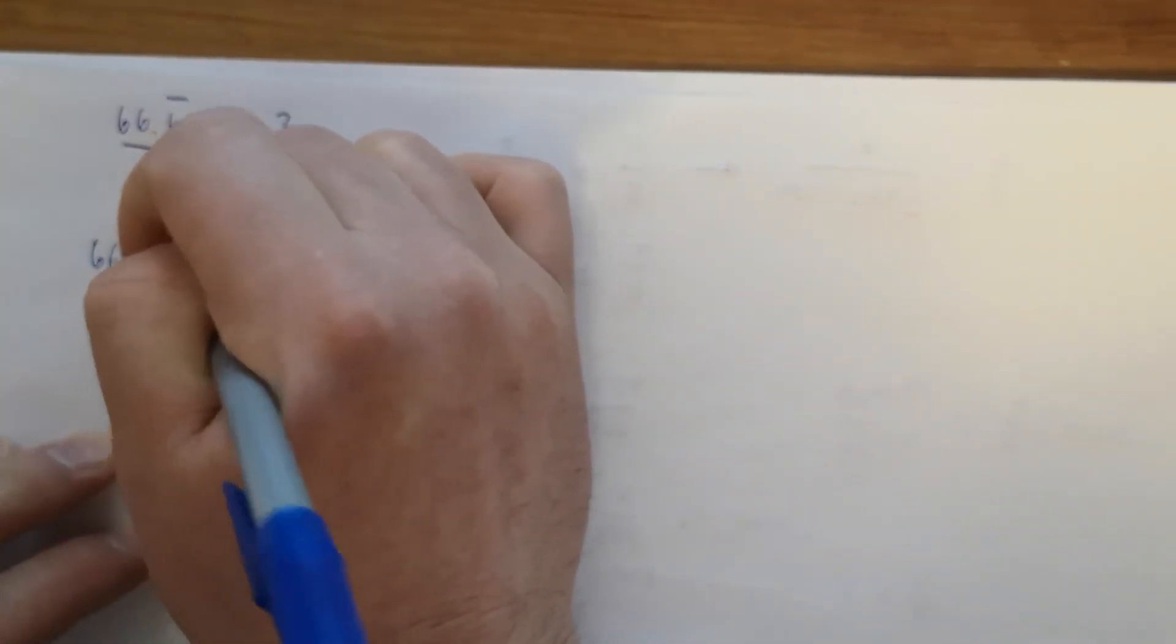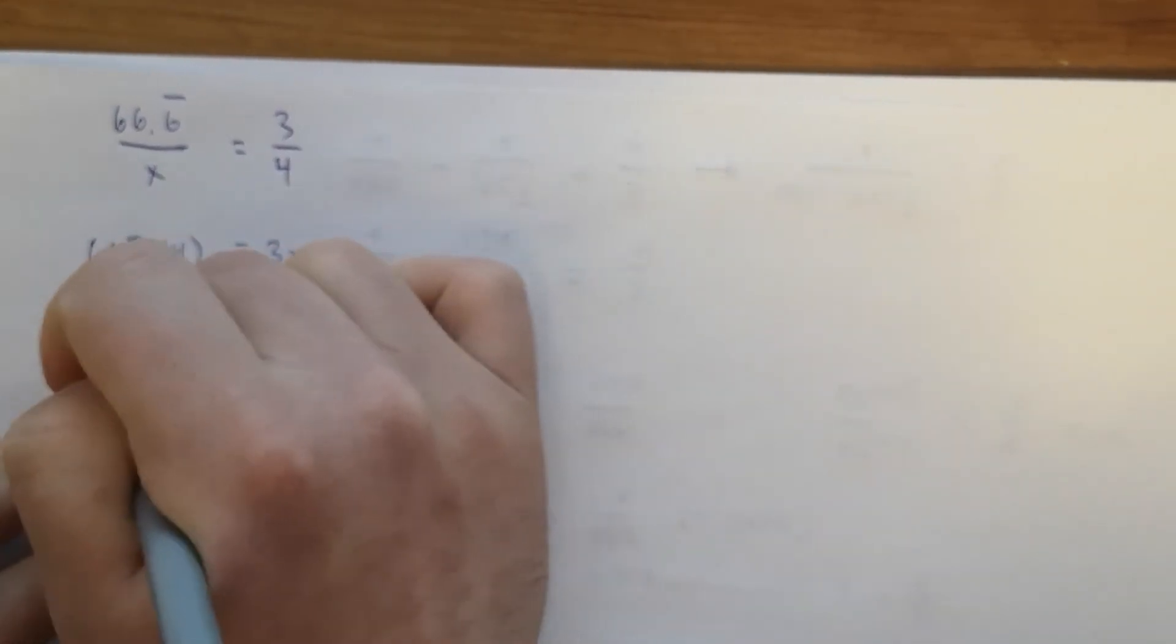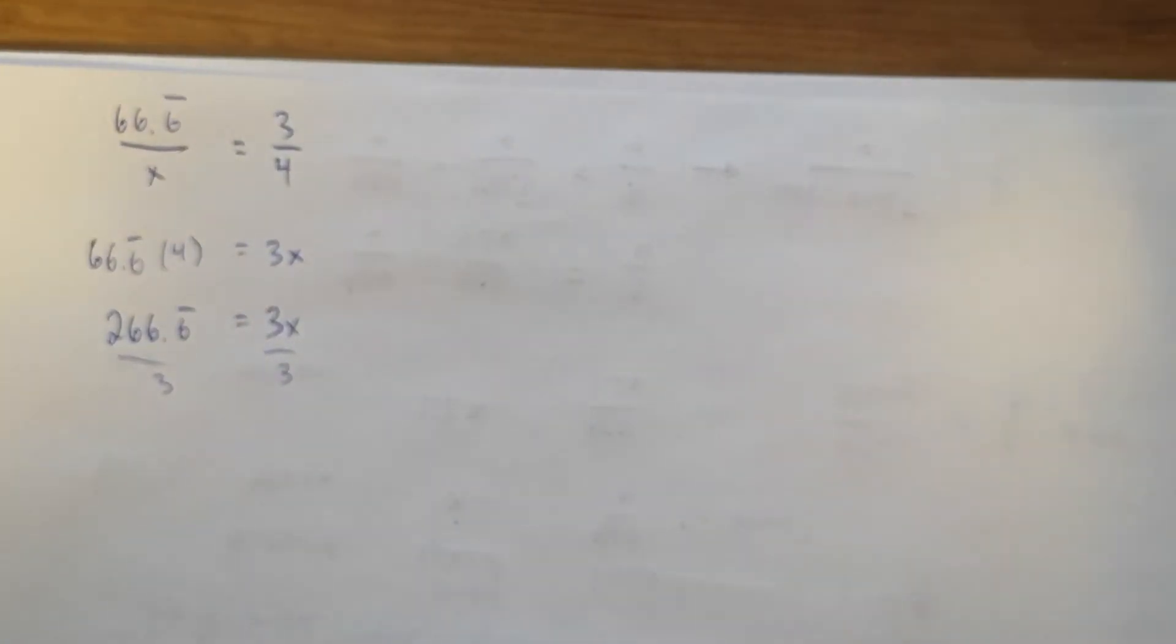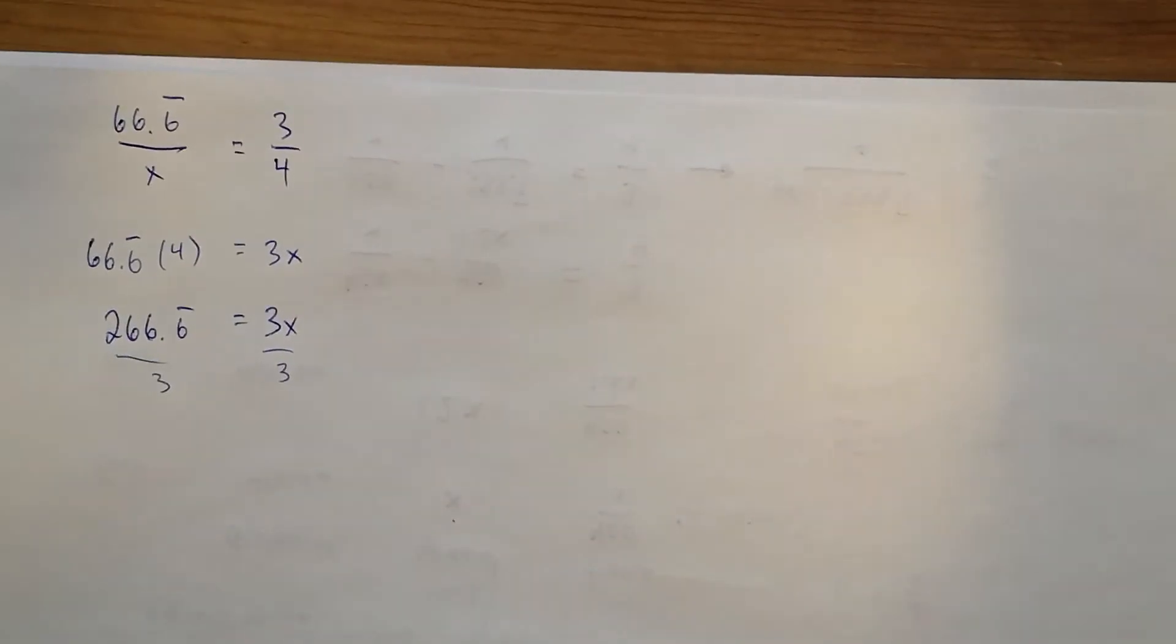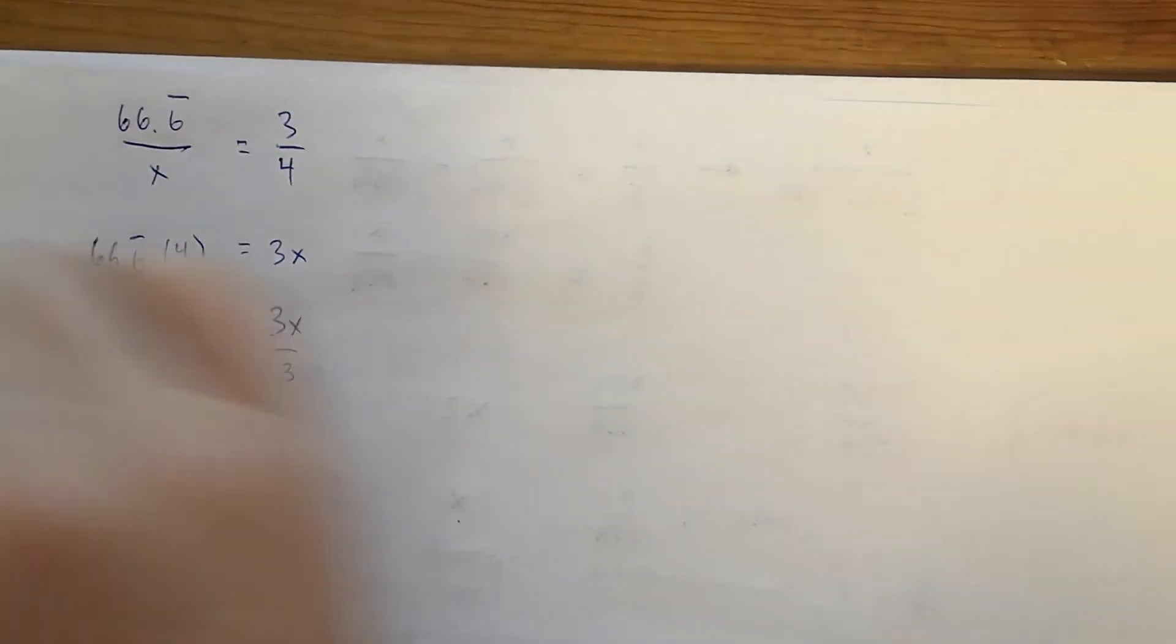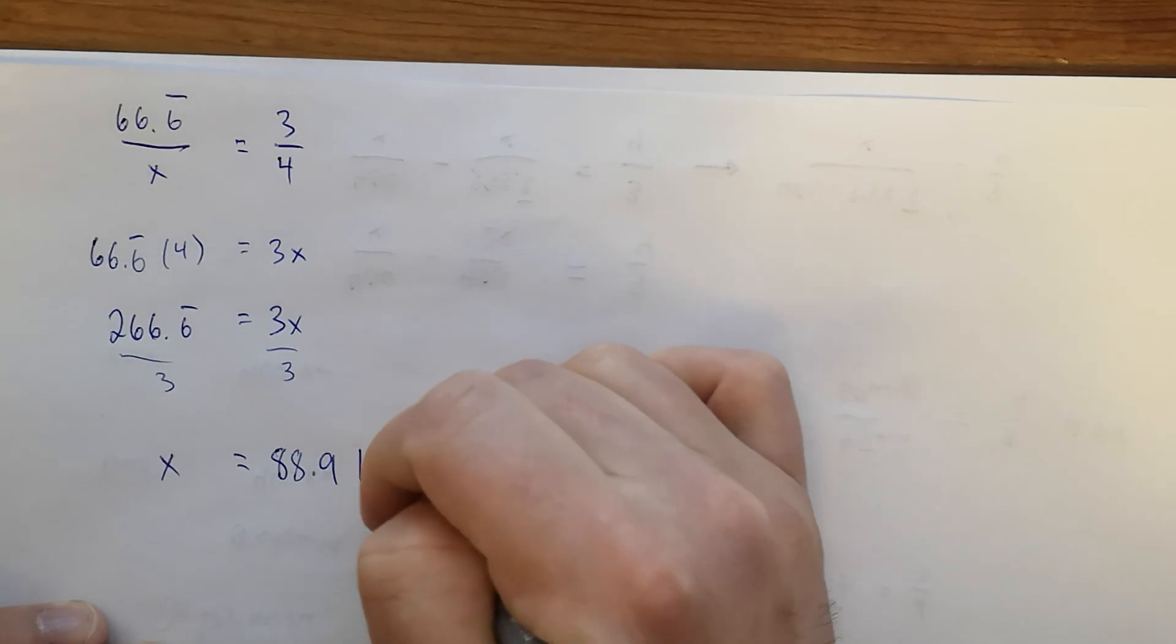So 66.6 repeating times 4 equals 3x. And then you just divide by 3. So it looks like the bus is going about 88.9 kilometers per hour.